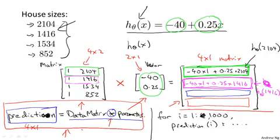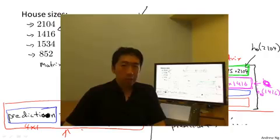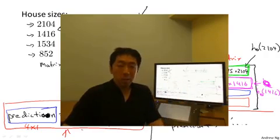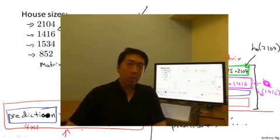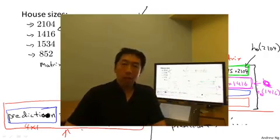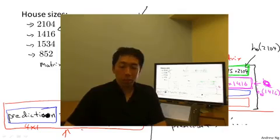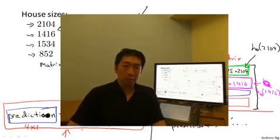That's it for matrix-vector multiplication. We'll make good use of these operations as we develop linear regression and other models further. In the next video, we're going to generalize this to the case of matrix-matrix multiplication.